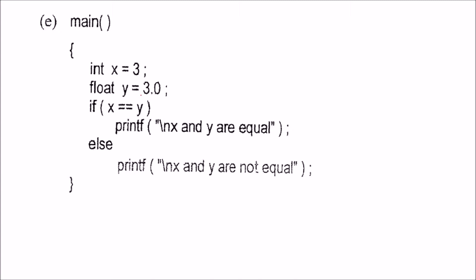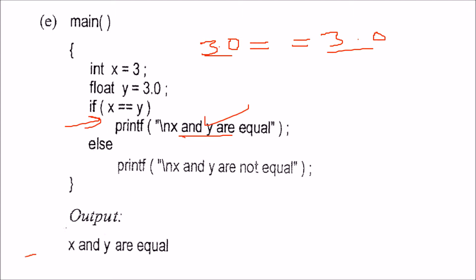x equals 3 and y equals 3.0. x double-equals y — 3 and 3.0 are different types, but when you compare them, 3 must be upgraded to 3.0. Now 3.0 and 3.0 are equal, so 'x and y are equal' will be shown.